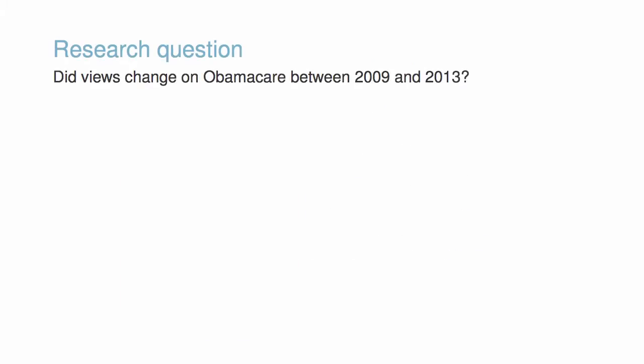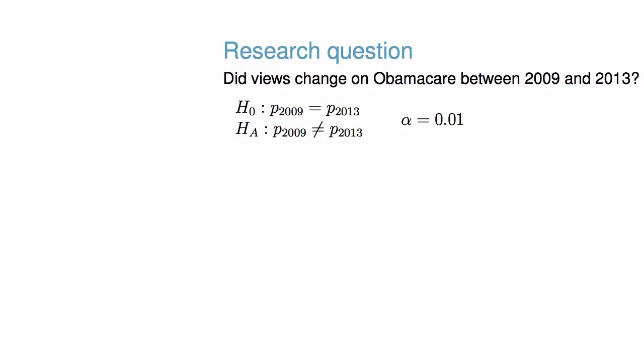We'll consider whether views changed on individual healthcare costs due to Obamacare from 2009 to 2013. We might wonder: has the fraction of people who believe it will increase their healthcare costs changed? We can set up hypotheses for this question, and we'll use the significance level of alpha equals 0.01.